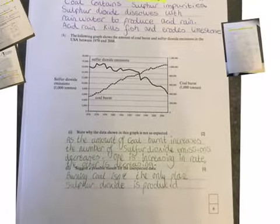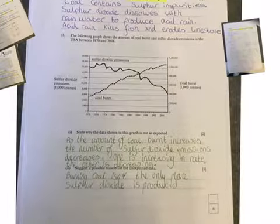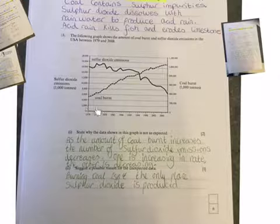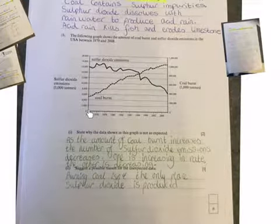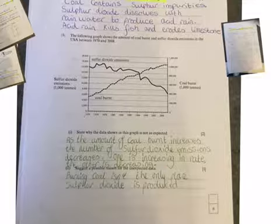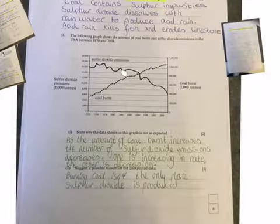Moving down the page, looking at a graph. One side is showing the amount of coal burned, that's going up here - how many tonnes of coal are burned over a period of like 30 odd years. And then it's looking at the amount of sulfur dioxide emissions. As you can see, sulfur dioxide is slightly decreasing. State where the data shows the graph data is not to be expected.